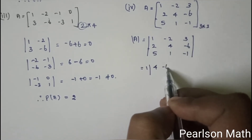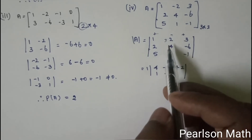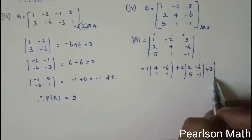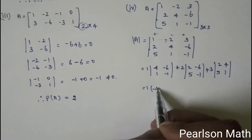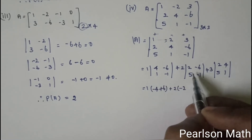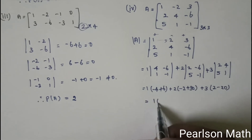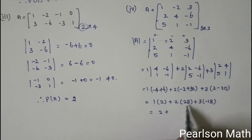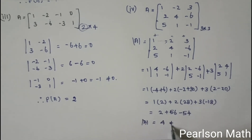We expand the determinant along the first row, first column. The cofactor signs are +, −, +. Expanding: 1×(4×−1 − (−6)×1) − (−2)×(2×−1 − (−6)×5) + 3×(2×1 − 4×5). This gives 1×(−4+6) + 2×(−2+30) + 3×(2−20) = 1×2 + 2×28 + 3×(−18) = 2 + 56 − 54 = 4. The determinant value is 4, not equal to 0.